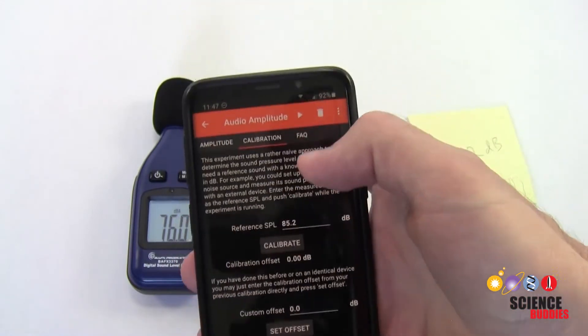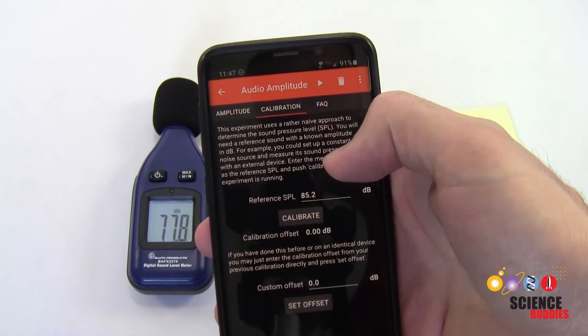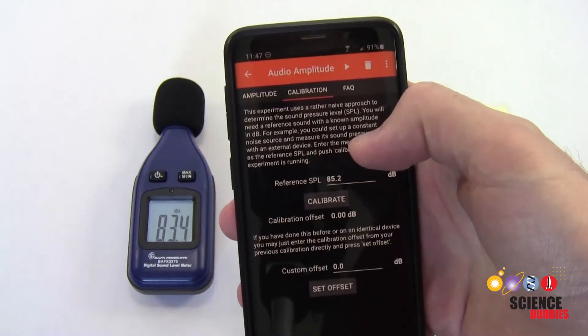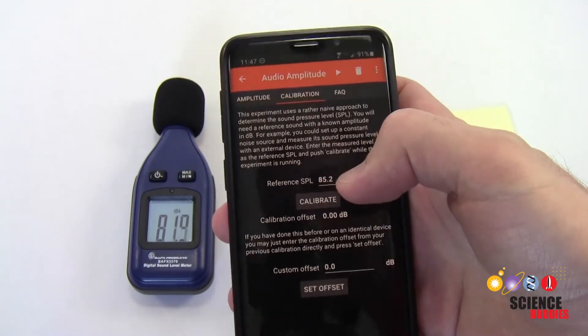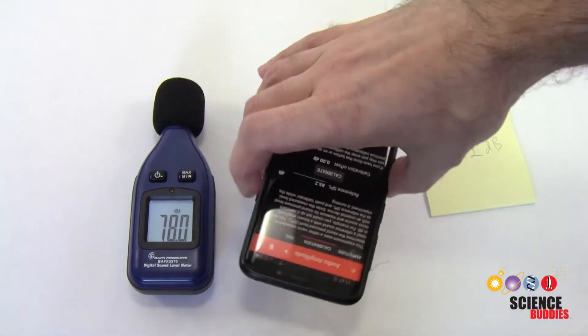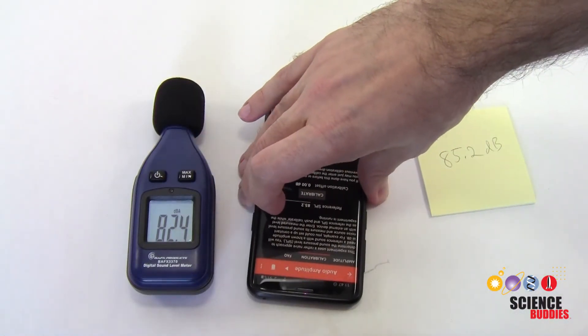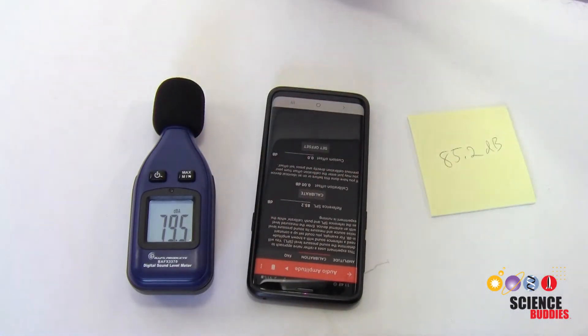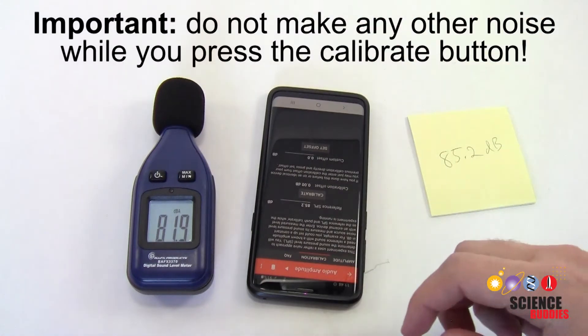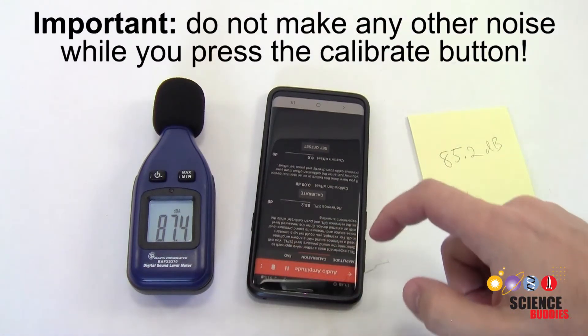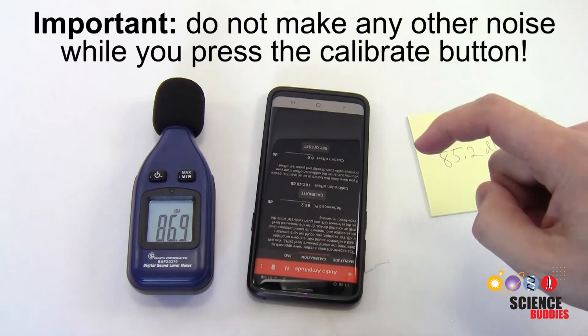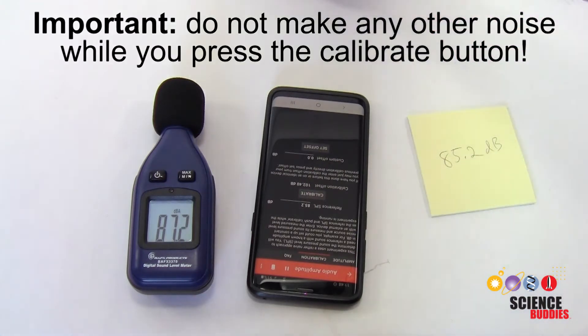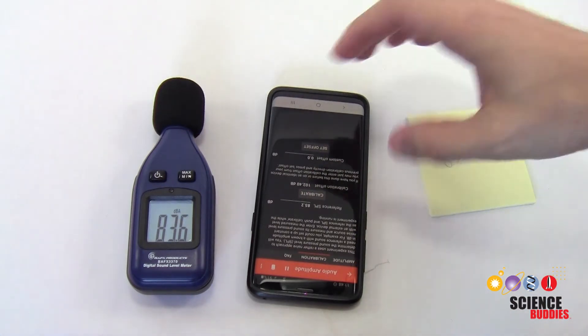Now, I'm going to put the phone down, start the recording by hitting the play button, play my 1 kilohertz test tone again, and press the calibrate button. Flip the phone around so the microphone is facing towards the sound source, play my test tone, start the recording, press the calibrate button, and stop my tone.